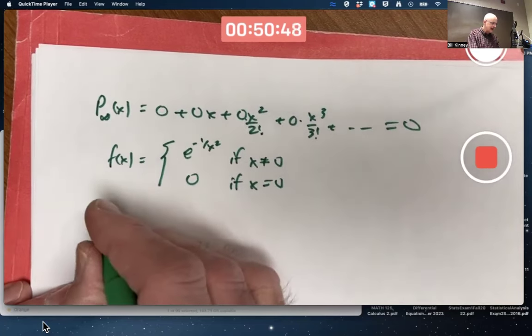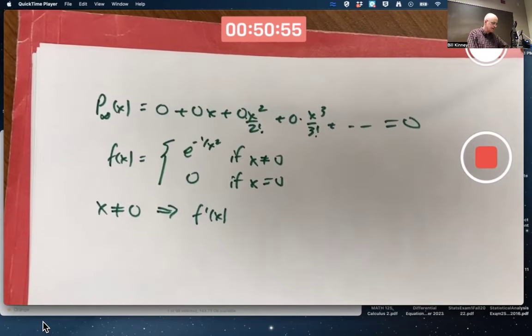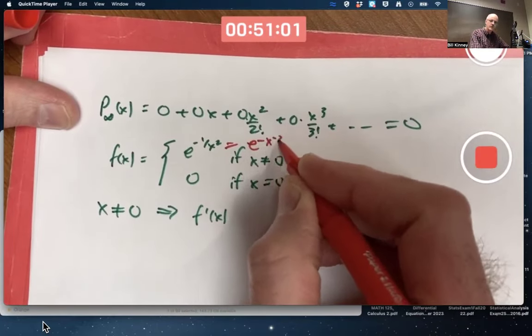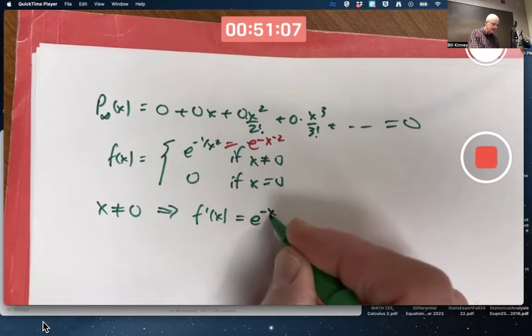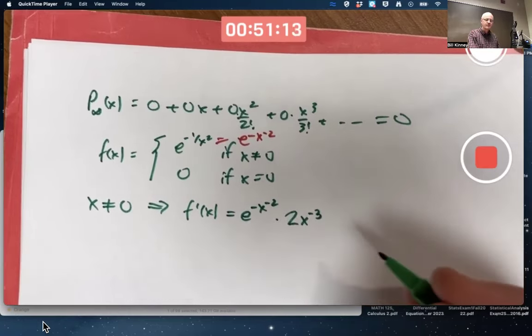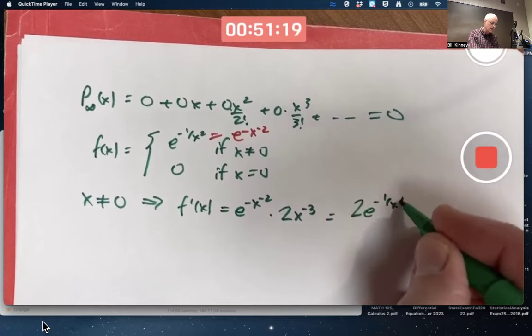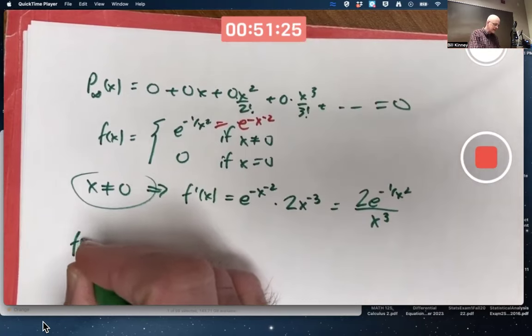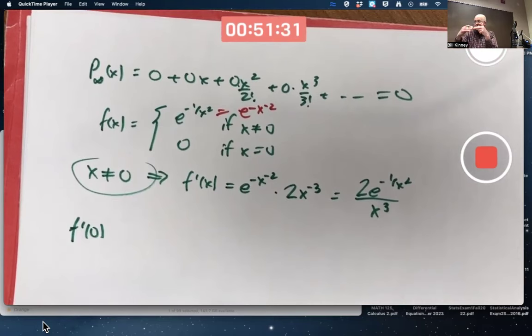Certainly if x is not zero, I can differentiate this function using the chain rule. And in fact, this would be the same as e to the negative x to the negative two. The chain rule would give the derivative of e to the negative x to the negative two times the derivative of that exponent, which would be positive two x to the negative three. You could write this as two e to the negative one over x squared over x cubed if you like. But that's only if x is not zero. What if x does equal zero? What is f prime of zero? Does it even exist?